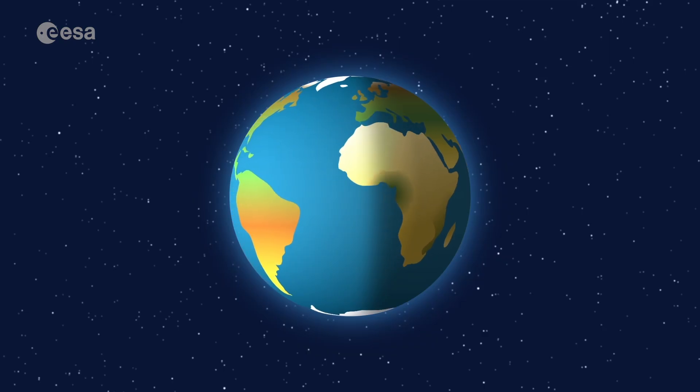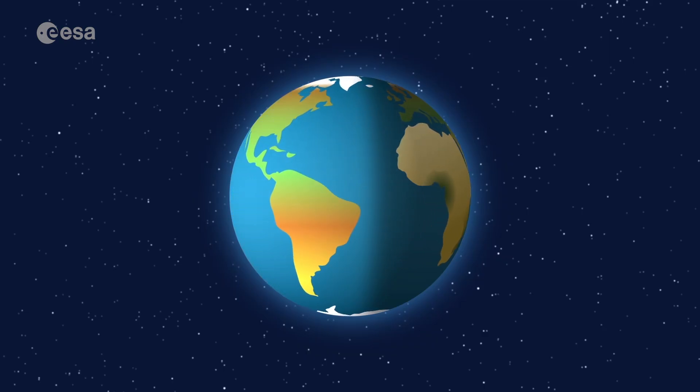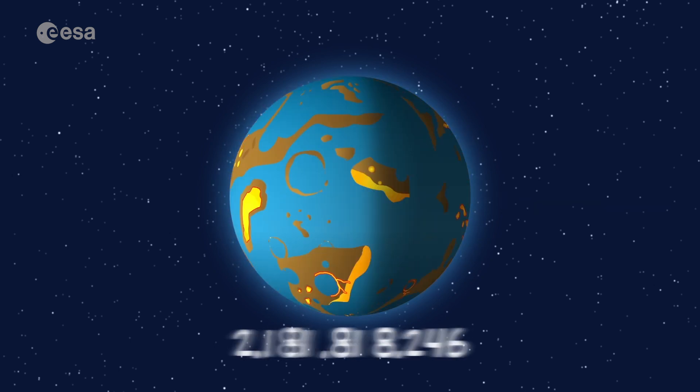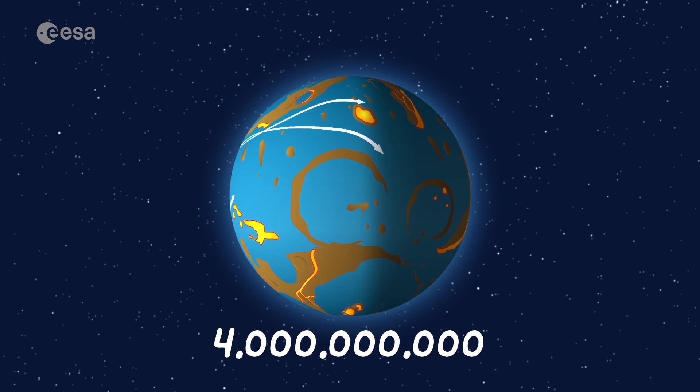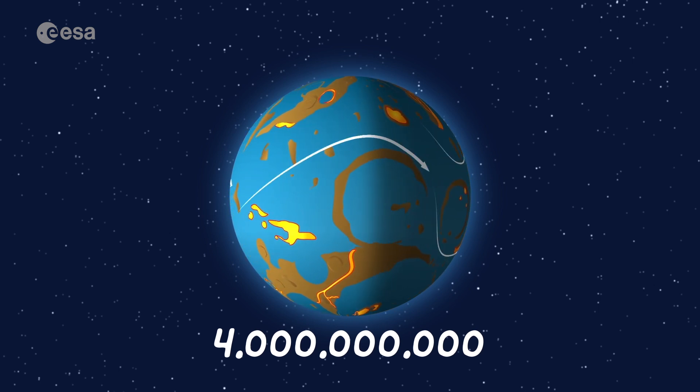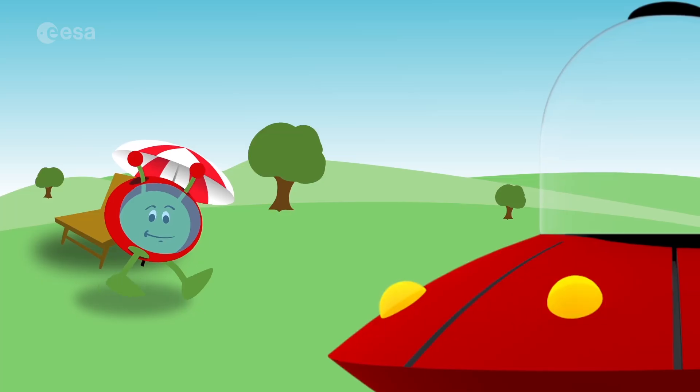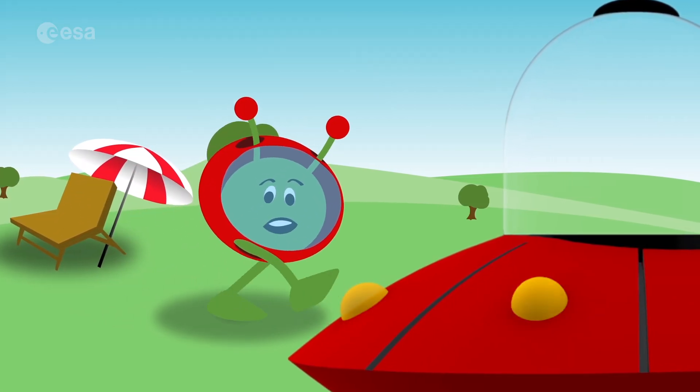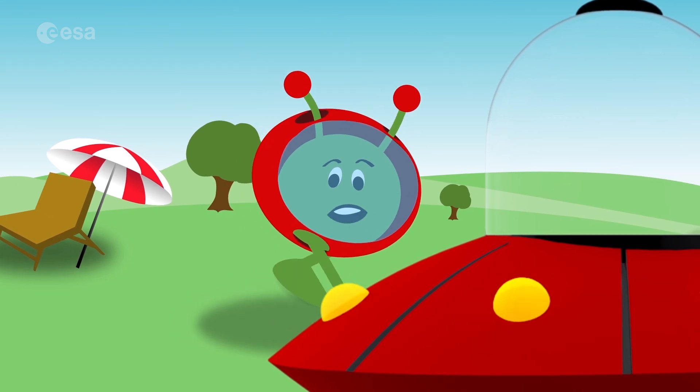The Earth only has a certain amount of water, and it's the same today as it was 4 billion years ago. It travels around and around and around. This is called the water cycle.